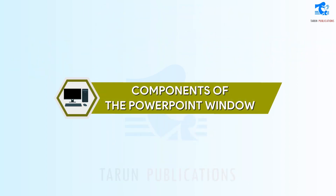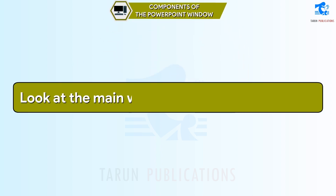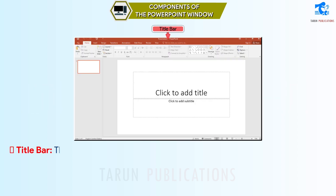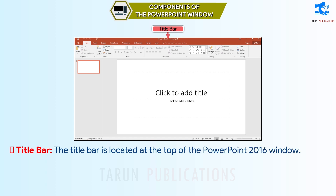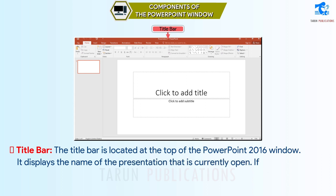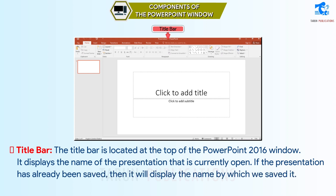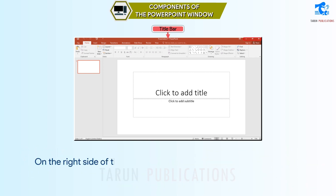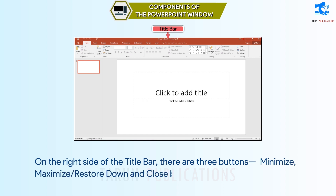Components of the PowerPoint Window. Look at the main window of PowerPoint 2016. Title Bar: The title bar is located at the top of the PowerPoint 2016 window. It displays the name of the presentation that is currently open. If the presentation has already been saved, it will display the name by which we saved it. If not saved, it will display the name Presentation 1. On the right side of the title bar, there are three buttons: Minimize, Maximize/Restore Down, and Close.